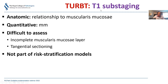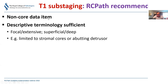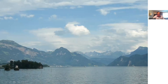Sub-staging of T1 disease in TURBT specimens can be done anatomically based on the relationship to the muscularis mucosae - whether tumor goes beyond it (T1a and T1b) - or by millimeter depth of invasion. Both are difficult to assess because the muscularis mucosae layer is incomplete, and tangential sectioning can overestimate depth. This is not currently part of any risk stratification model. We recommend it as a non-core data item, and simply reporting as focal, extensive, superficial, or deep - such as 'focal limited to the stromal cores' or 'extensive abutting the detrusor muscle' - is sufficient.